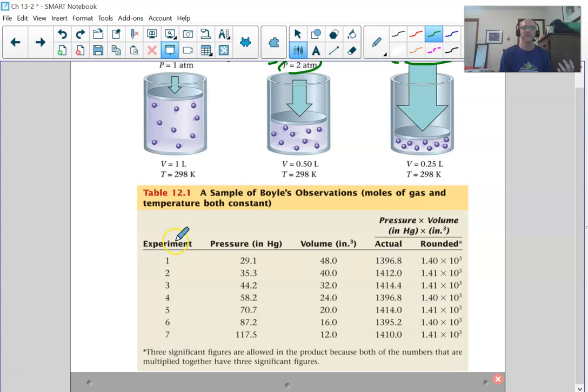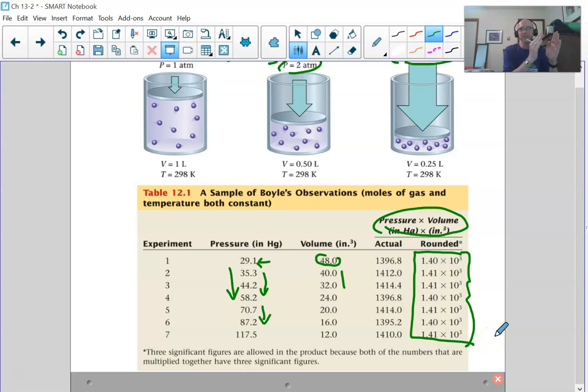Notice we've got seven different experiments here at different pressures. The first one is atmospheric pressure, but all the rest are increments of that. If we increase pressure going down the table, we should decrease volume. And you see that. What's important here is look what the pressure times volume ends up to be. Just about the same number. So pressure times volume is a constant. If we know P times V for initial conditions, and we know one of the two for the final conditions, either pressure or volume, we can figure out the third.